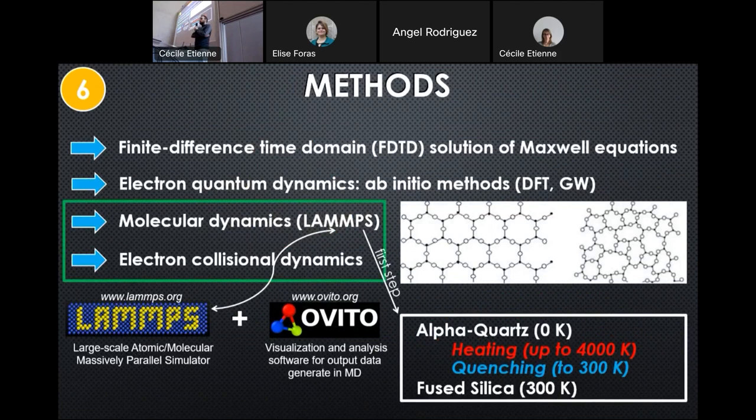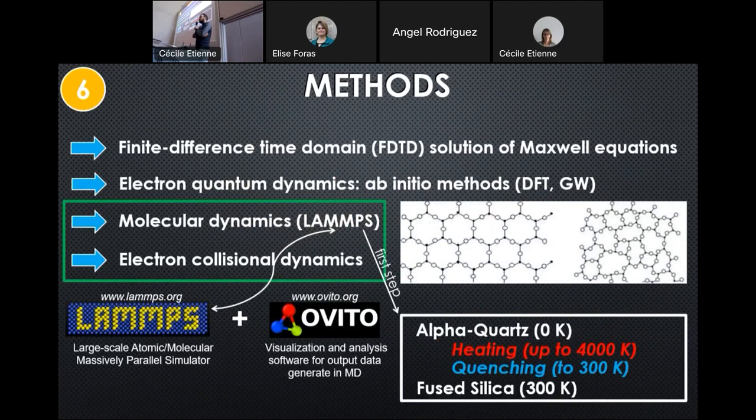We need to improve this. The methods to do that have four steps. The first two steps are finite-difference time domain (FDTD) solution for Maxwell equations and the electron quantum dynamics, which is ab initio method. As Professor Colombier told you, we have a big team and everyone is specialized on some specific works.